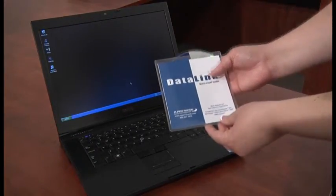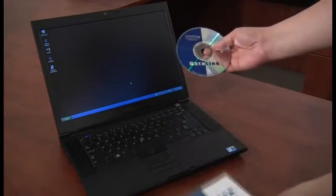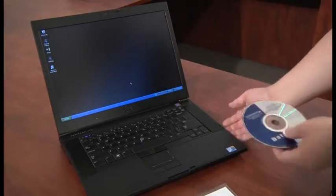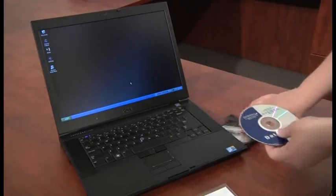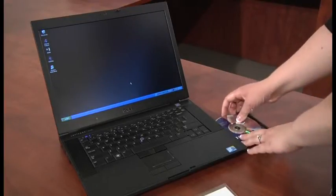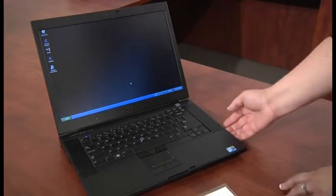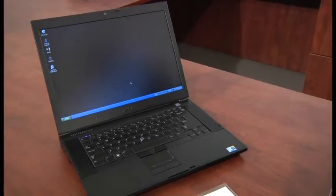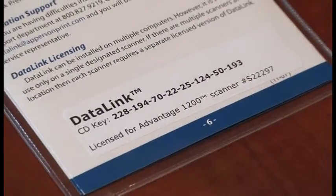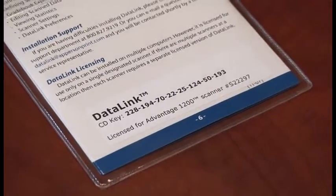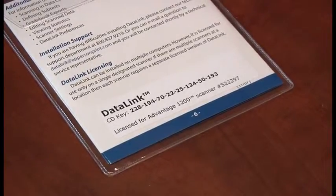To install Datalink, you must be logged on to the computer with administrator privileges. Insert the CD to your CD drive and select Install Datalink from the list of options when the install window appears. Also included on the CD are optional installs for the scanner USB driver and scanner firmware updater. Scanners are sent with the most current firmware available.